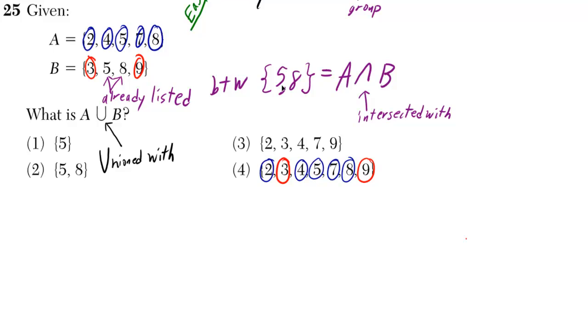So you would say the set of 5 and 8 is actually what you would get if you did A intersected with B.